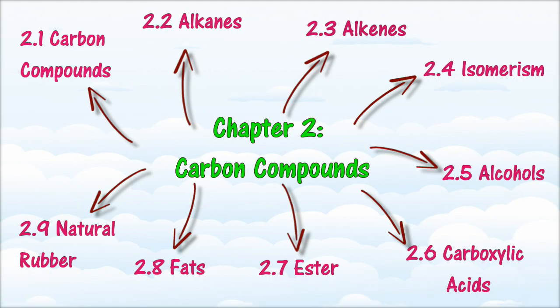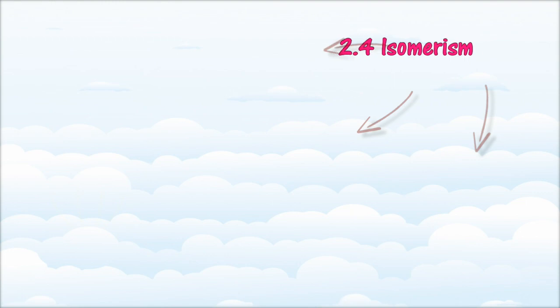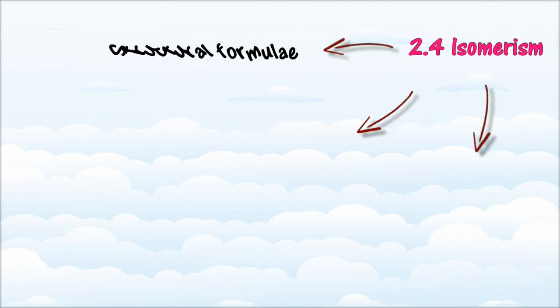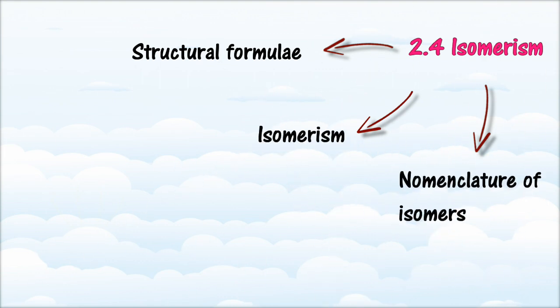In Section 2.4, we will learn about Isomerism. At the end of this section, you should be able to: construct various structural formulae of a particular alkane and alkene; explain what isomerism is; and use IUPAC nomenclature to name isomers.